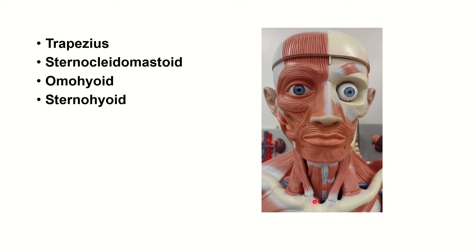Sternohyoid goes from the sternum all the way to the hyoid bone — it's a superficial muscle. Sternothyroid goes from the sternum to the thyroid cartilage. Thyrohyoid goes from the thyroid cartilage up to the hyoid bone.